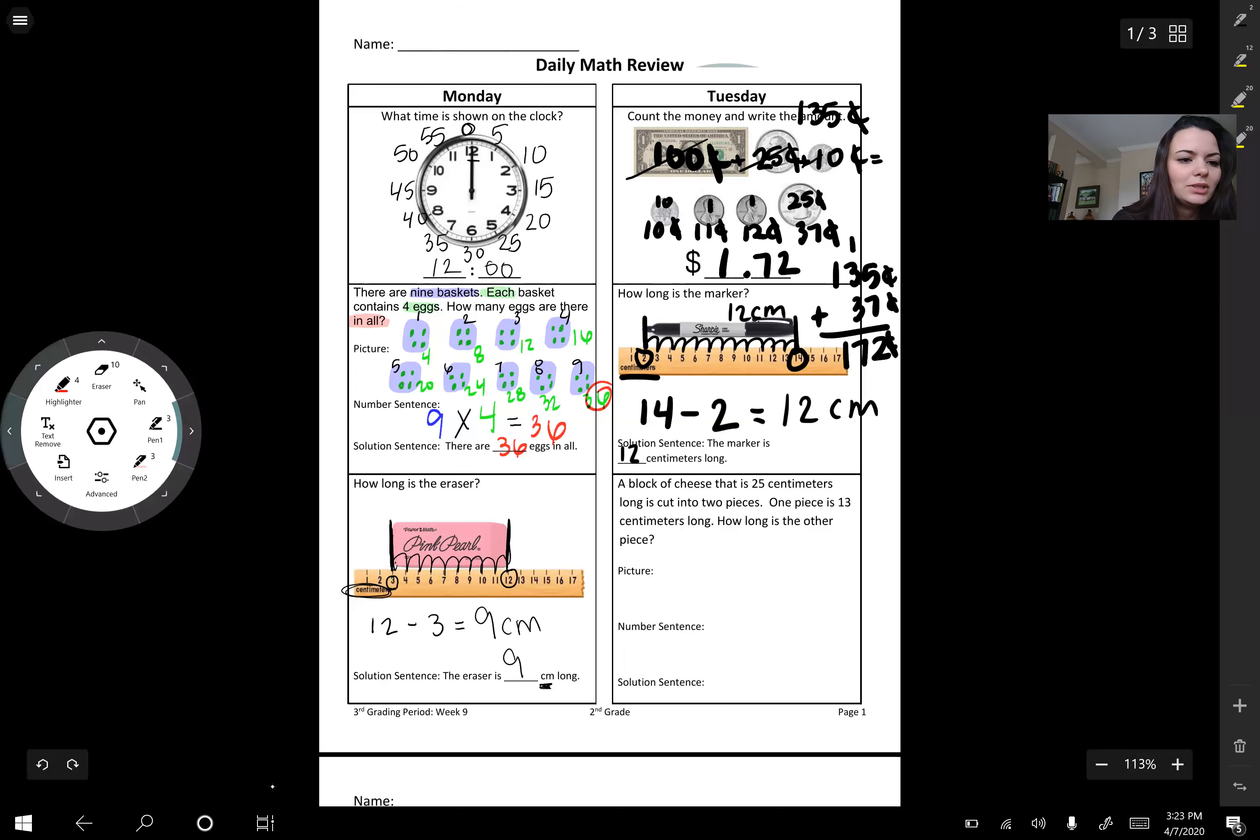Okay, let's move on and we're going to make sure this time we have a word problem. So we're going to highlight our key words. A block of cheese that is 25 centimeters long. So we have 25 centimeters is cut into two pieces. It's cut. We had an action.